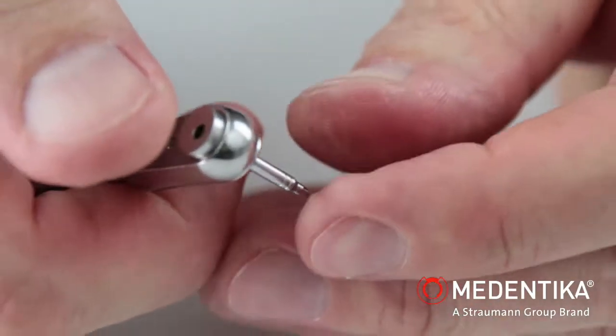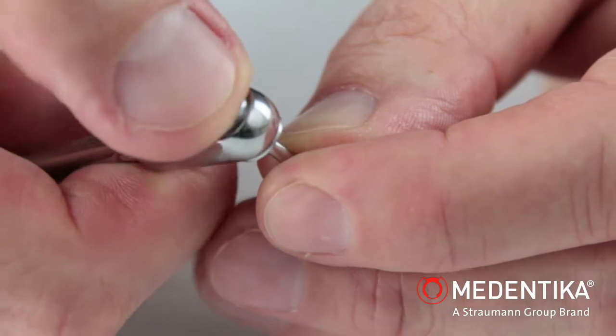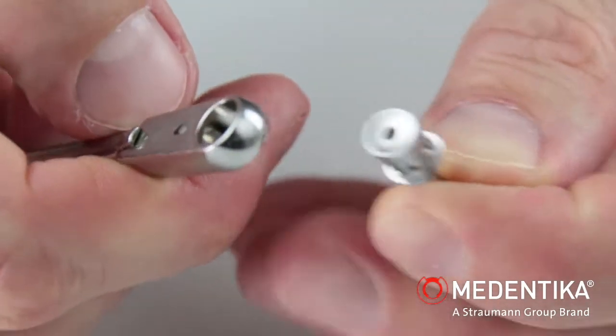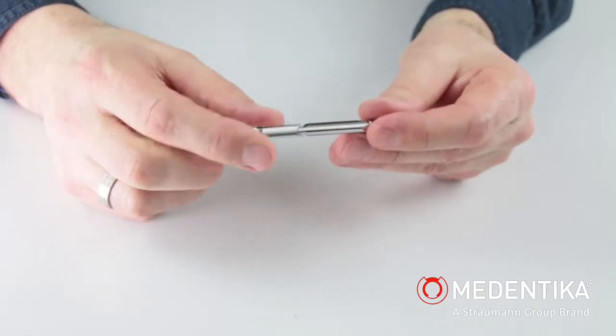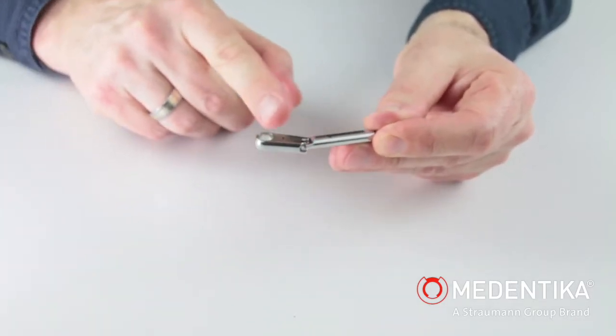The instrument is removed again from the ratchet by applying light pressure with the fingertips. When using a torque, the ratchet head signals when the torque is reached by bending.